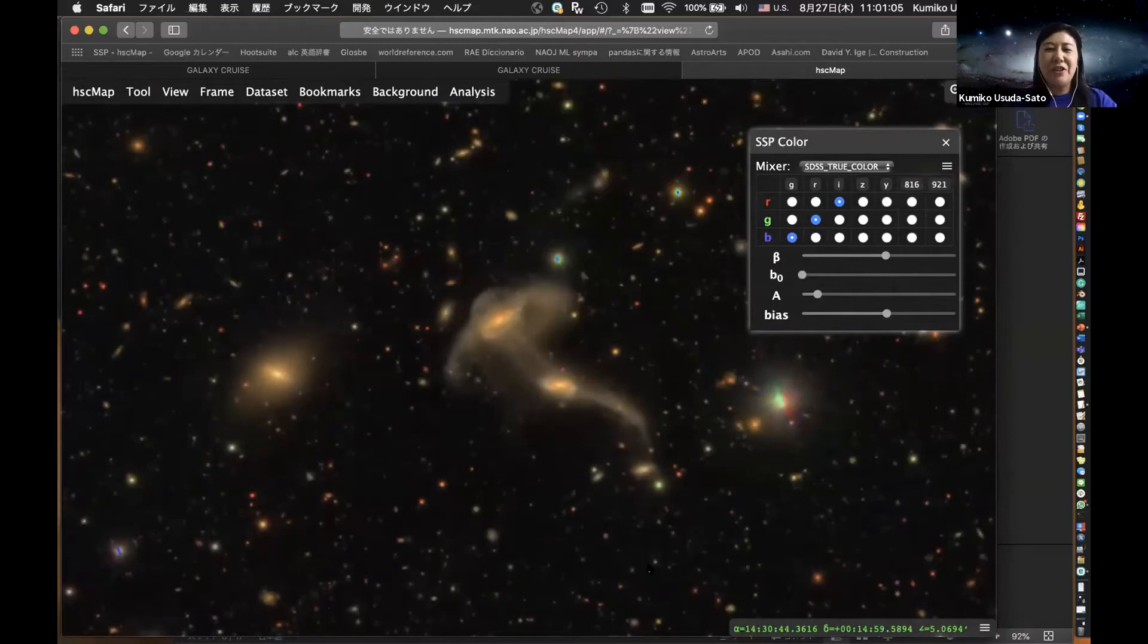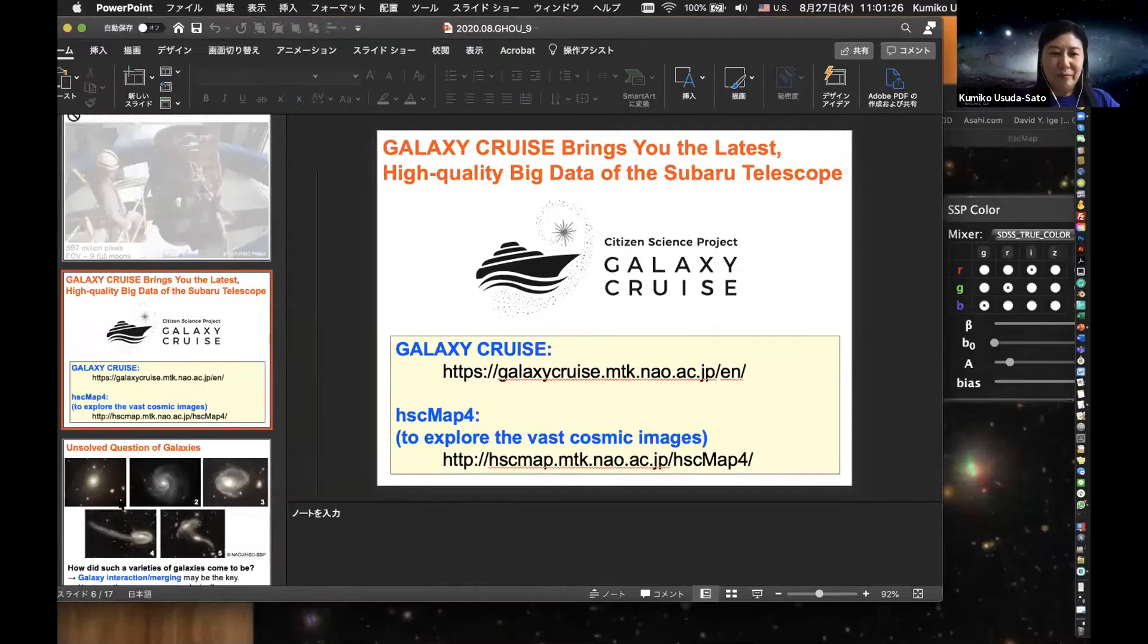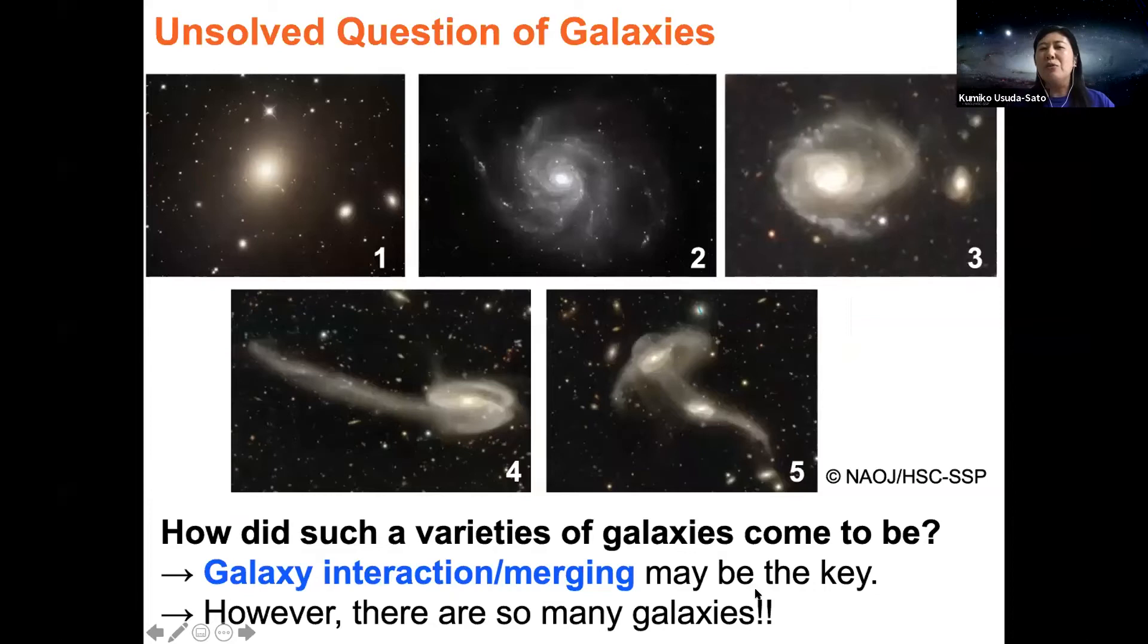Let me show you another galaxy, the Jellyfish Galaxy. This galaxy looks like a jellyfish in the ocean. Actually, the Jellyfish Galaxy consists of two spiral galaxies, this one and this one. So two spiral galaxies are interacting with each other with their mutual gravity. These are also interacting galaxies.